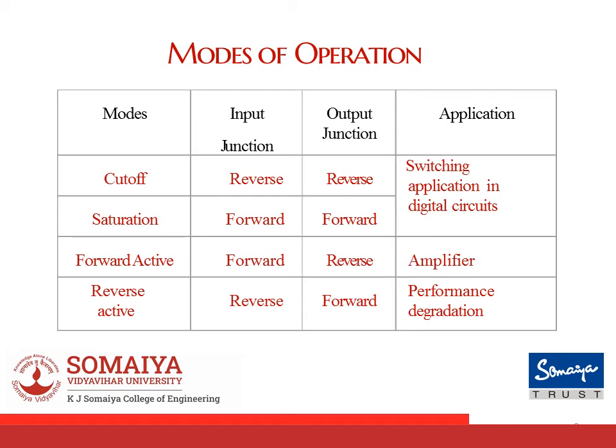Before we start with the working analysis of bipolar junction transistor, let's look into the different modes of operation the device offers. The operation of the BJT depends upon the type of biasing connected at the input and output junction. If both input and output junctions are reverse biased, it will operate in cut-off. If both are forward biased, it operates in saturation. If input is forward biased and output is reverse biased, it operates in forward active region. If input is reverse biased and output is forward biased, it operates in reverse active region.